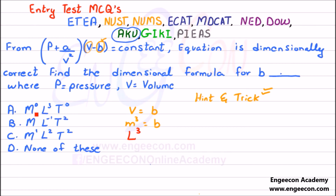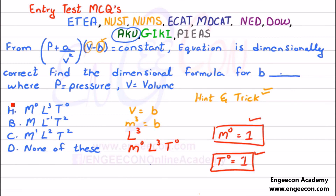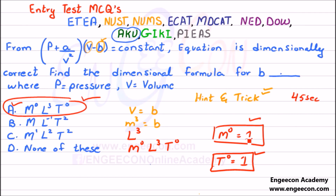Since the answer is expressed in MLT form, we write M raised to power 0, L raised to power 3, and T raised to power 0. Since anything raised to power 0 equals 1, option A is the right answer. Using these hints and tricks, this entry test MCQ is solved in just 45 seconds.